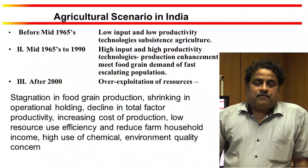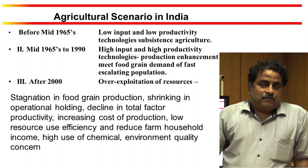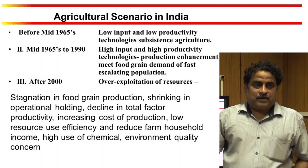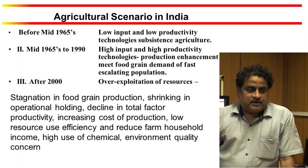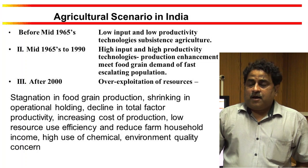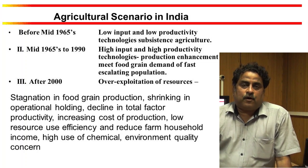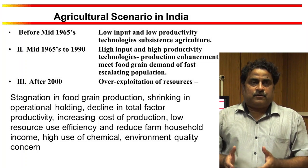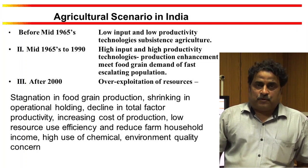First of all, we should look upon the agriculture scenario of India, because it is necessary to understand why we should proceed for organic farming. If we see the agriculture scenario of India, it should be divided into three phases. Before 1965, that is low input and low output agriculture, where we are using low input and also getting low output.